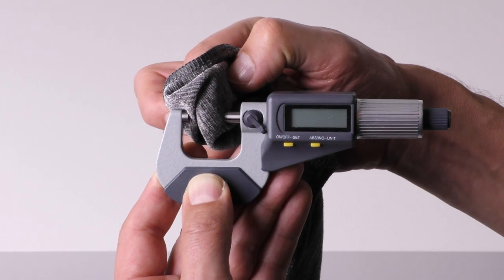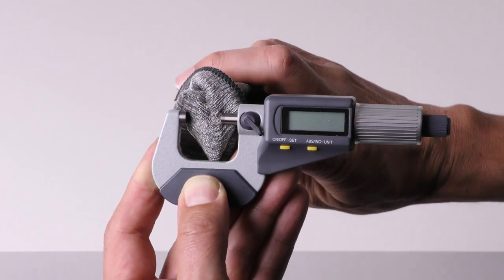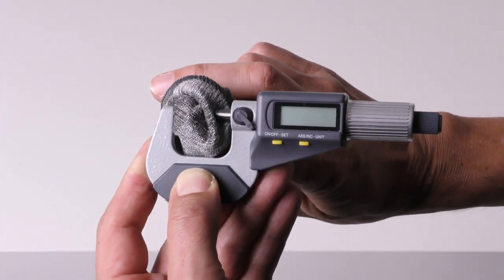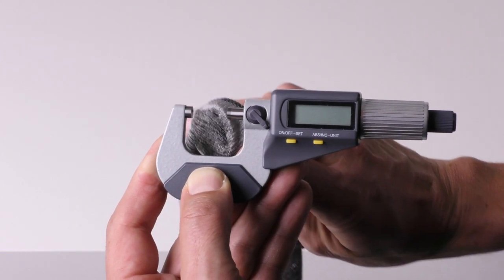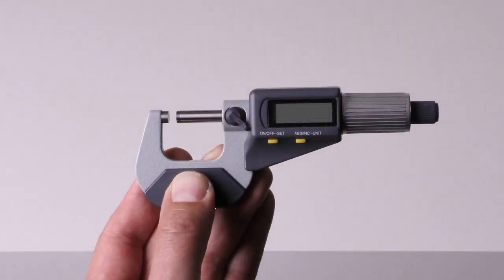Before using the micrometer, make sure that the measuring surfaces are absolutely clean. If necessary, use a clean cloth. Before you can start measuring you have to set the zero point of the micrometer. Without a correct zero point, all measurement values will be incorrect.